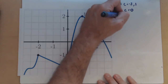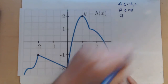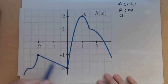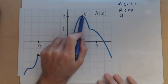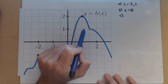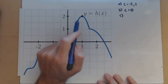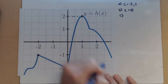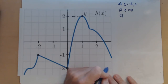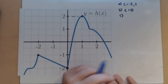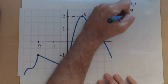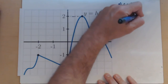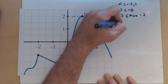Now, c: does h have a global maximum? Well, it does because it has one output that is higher than all the others. The value of the global maximum is going to be 2, because now we're talking about the maximum value of the function — it's the output. So the global max equals 2, and it occurs at 1.